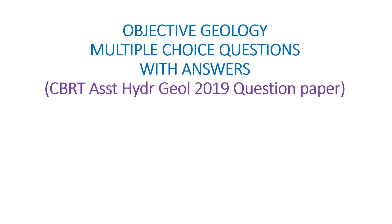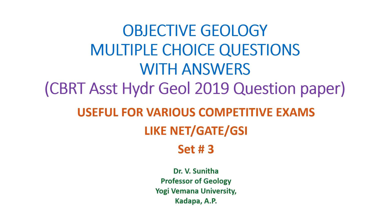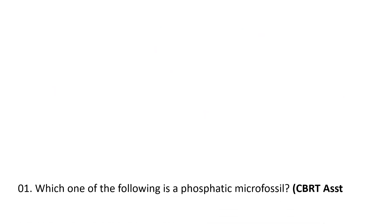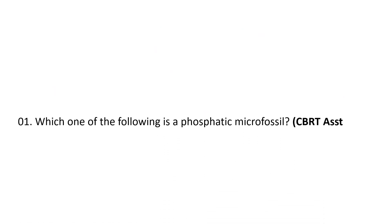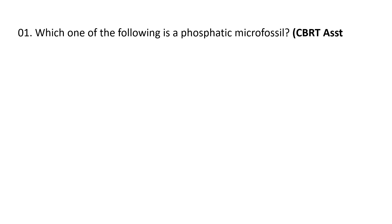Objective geology multiple choice questions with answers. This is a solved question paper of CBRT Assistant Hydrogeologist 2019. This question paper is useful for various competitive exams like CSIR NET, GATE, GSI, and other exams. Welcome to Set 3. Coming to the first question: which one of the following is a phosphatic microfossil?